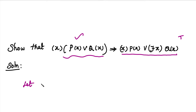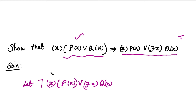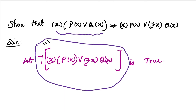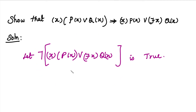We assume — let us assume for all x, p of x, or there exists some x, q of x — this negation value is true. Now we have two statements: one is in the statement, and one is in the statement. In the two statements, we use a contradiction — we have a contradiction — that is, contradiction is true.